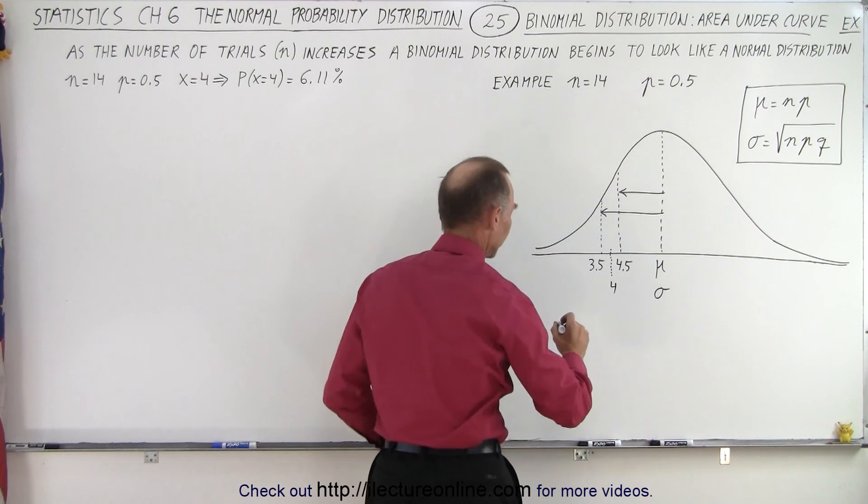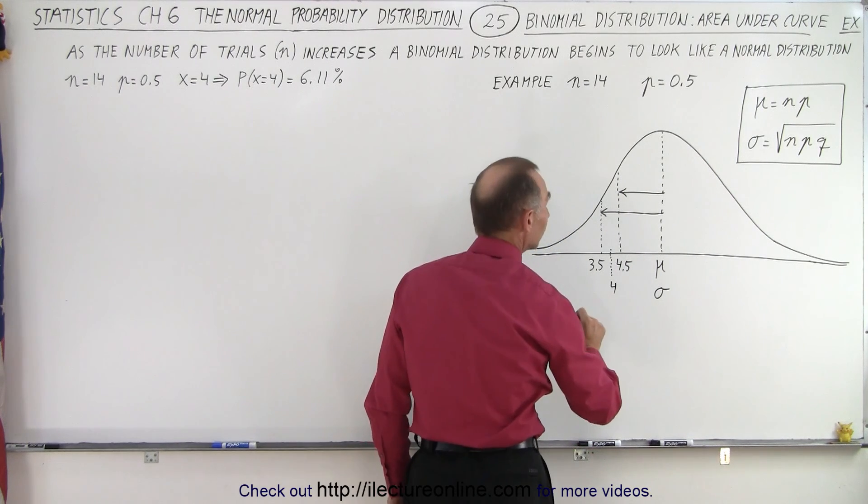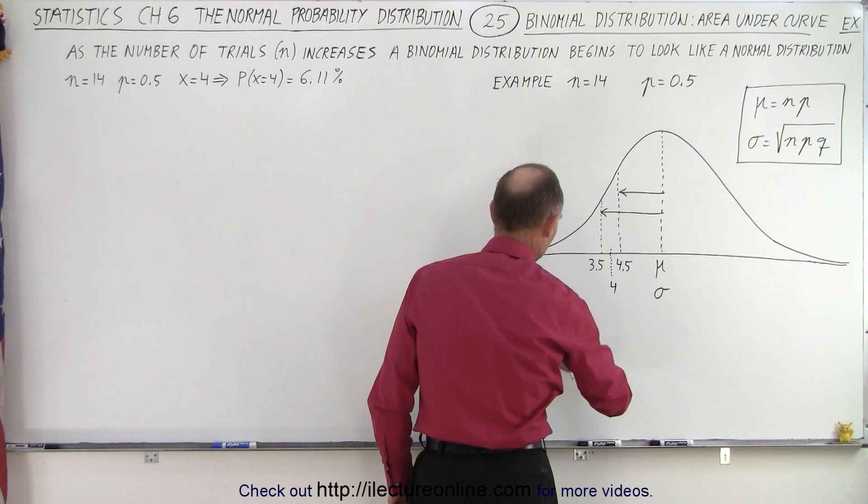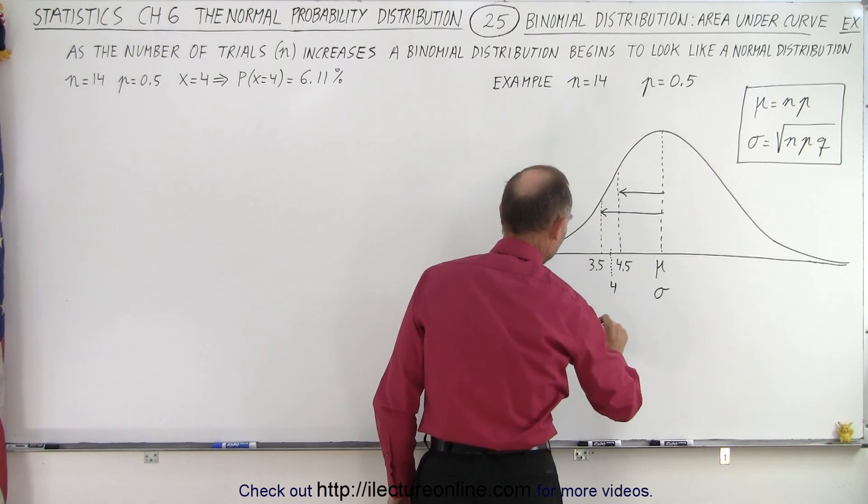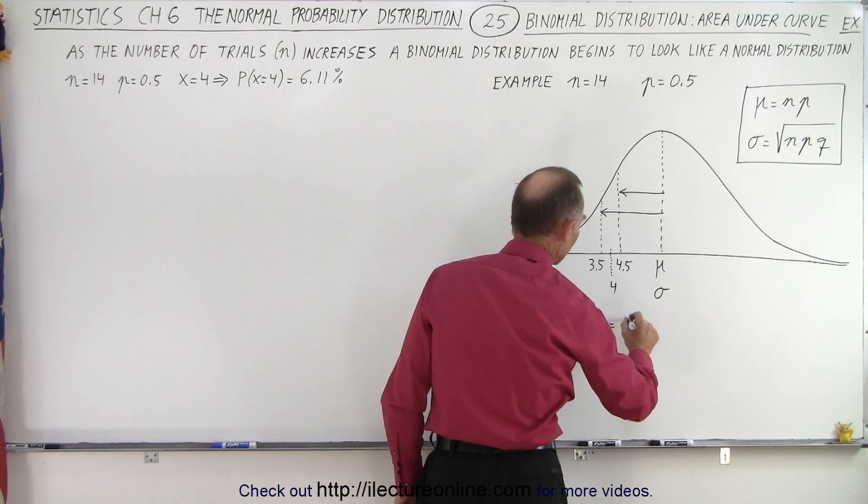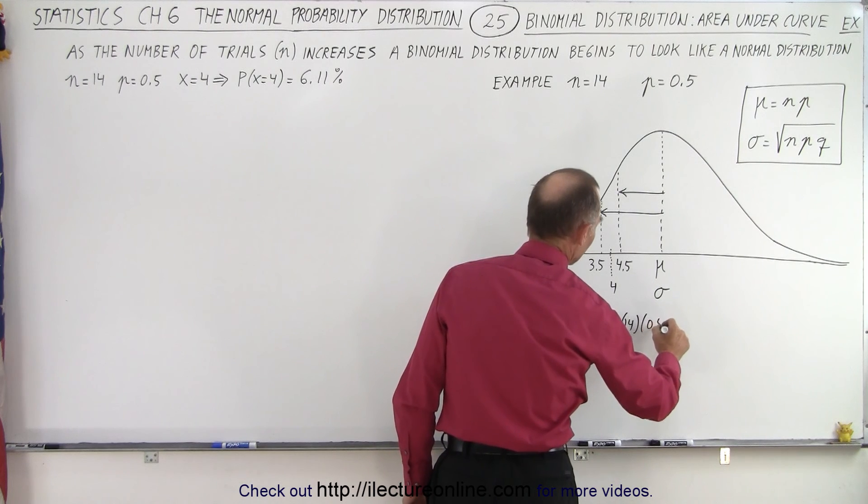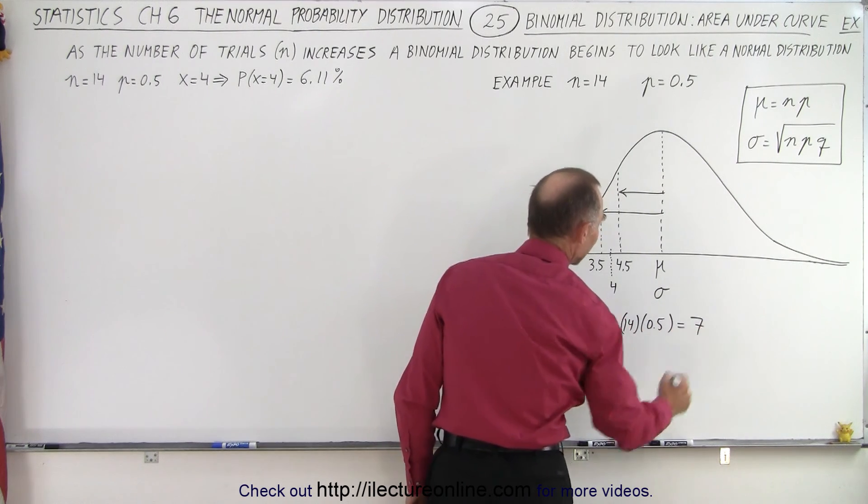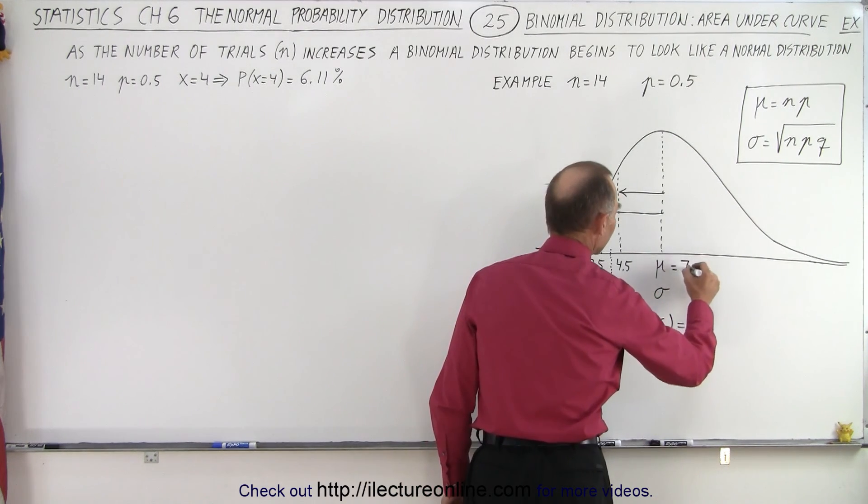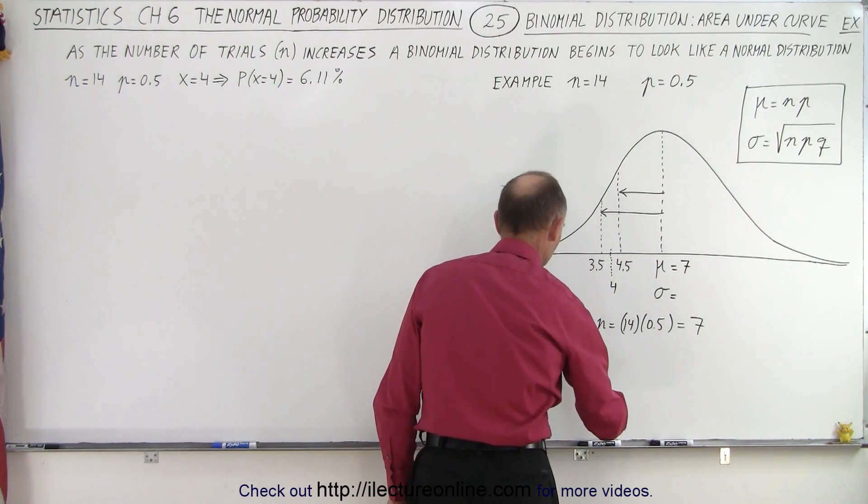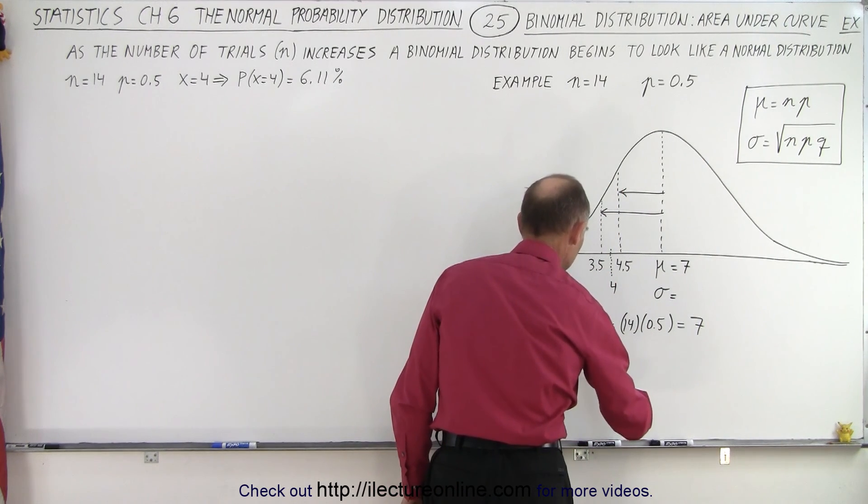So let's calculate those first. The mean is equal to n times p. n is 14, the probability of success is 0.5, so we get the mean equal to 7, and the standard deviation is equal to the square root of the number of trials times the probability of success times the probability of failure.